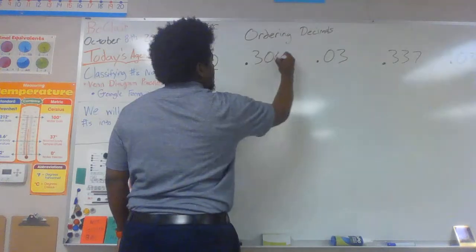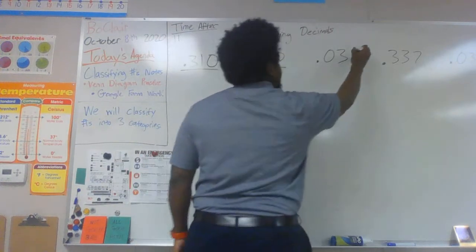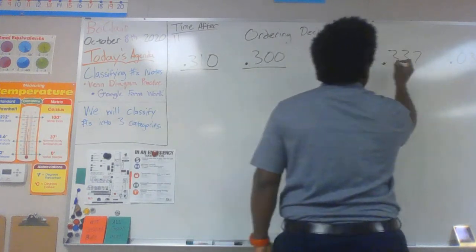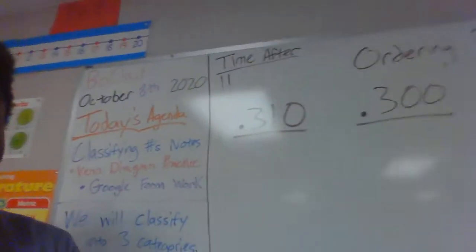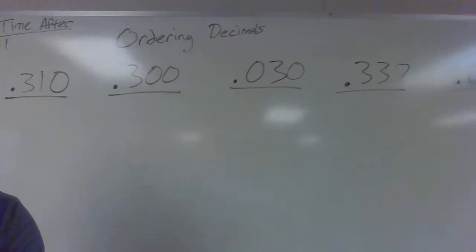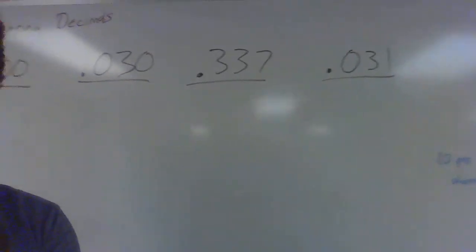So now if I needed to compare these, the smallest number looking at these is obviously 30 thousandths.